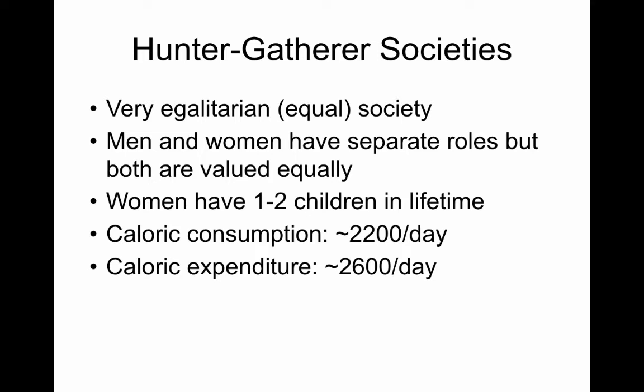One thing about hunter-gatherer societies and this egalitarianism is that there really wasn't a sense of patriarchy, which is our most common form of social inequality in human history. The reason for that is not only because everybody's contributions were so valued, but also because women had more freedom and time to contribute to the group in lots of different ways. They had that time because they had very few children — studying hunter-gatherer societies, women only had about two children in their lifetime that survived.